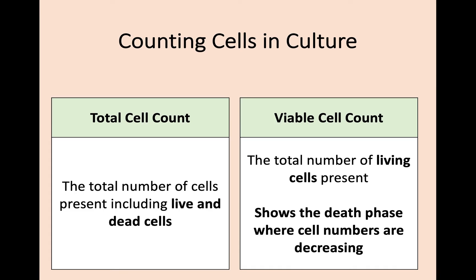Finally, we'll summarize the two different ways to count cells in a culture. A total cell count is exactly what it sounds like — you count the total number of cells in a sample, including both live and dead cells. However, through the use of dyes you can distinguish between live and dead cells, giving you a viable cell count, where you only count the total number of living cells present. A viable cell count is especially useful when referring to the phases of growth, because you can tell when the death phase is taking place — the number of living cells would be decreasing. With a total cell count, you would not be able to tell it was the death phase, because you would also be counting the dead cells.